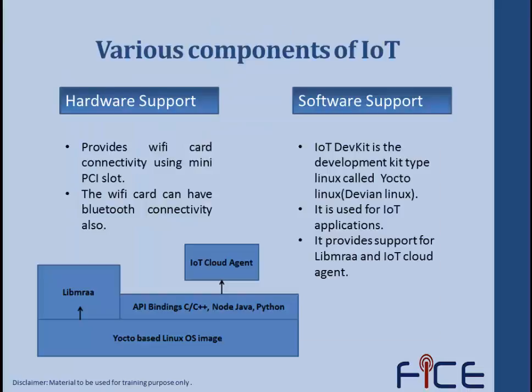IoT provides hardware support and software support. In hardware support, it provides various Wi-Fi cards. These Wi-Fi cards can provide our Galileo board with Wi-Fi connectivity. Some of these Wi-Fi cards are advanced enough to provide both Wi-Fi and Bluetooth connectivity. If we flip our Galileo board, we will see a mini PCI slot where we can insert our Wi-Fi card to provide Wi-Fi and Bluetooth connectivity.